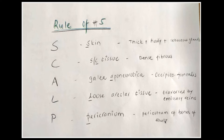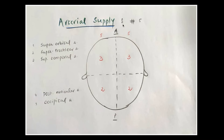The fifth layer is the periosteum of the bones of the vault — that is the pericranium — and it is firmly adherent to the sutures. This is how you can remember the layers of the scalp by remembering the spelling S-C-A-L-P. Next is arterial supply; again you need to remember the rule of five.